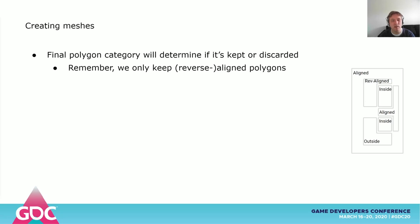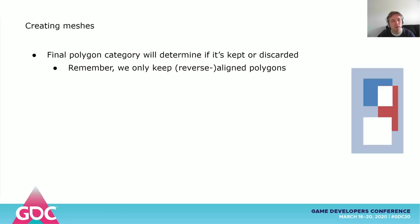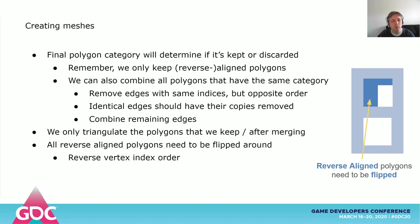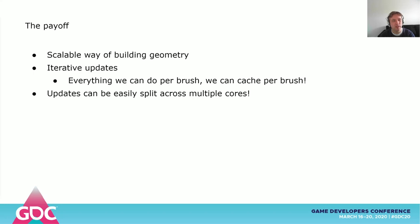Keep in mind even though holes are polygons they are never categorized — so don't throw those away. The white polygons are inside or outside and will be removed. We can also combine all the polygons that have the same category — this can remove some unnecessary vertices. We combine them, and then only triangulate the polygons that we want to keep. We should only triangulate after we merge polygons. Also, reverse aligned polygons need to be flipped around. All of this work leads us to this — giving us the ability to build geometry using boolean operations in a scalable way. The most important part is that we can now perform iterative updates. Everything we can do per brush we can cache per brush. Since most of the work is done per brush or per brush pair, we can also easily split work across multiple cores. And that's my talk. Thank you.